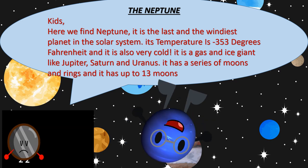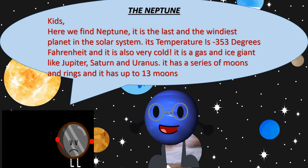Neptune. Here we find Neptune. It is the last and the windiest planet in the solar system. Its temperature is very cold, around negative 353 degrees Fahrenheit. It is a gas and ice giant like Jupiter, Saturn, and Uranus. It has a series of rings and up to 13 moons.